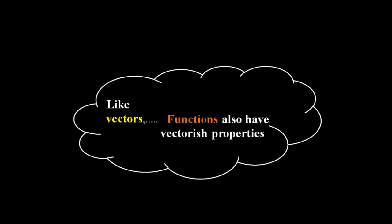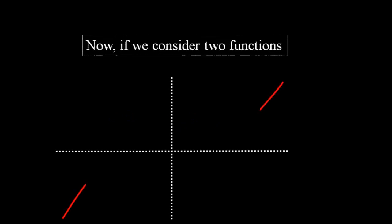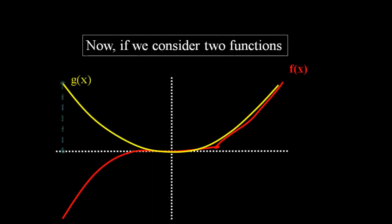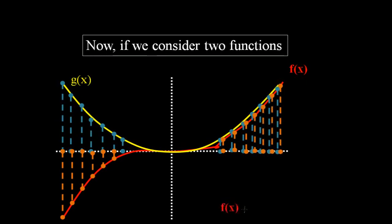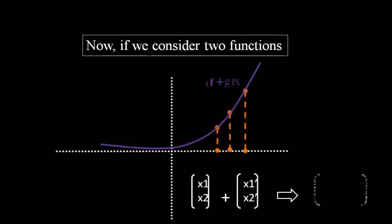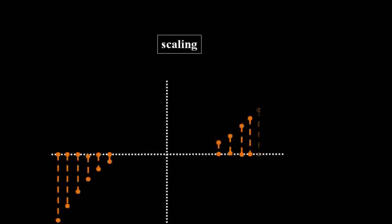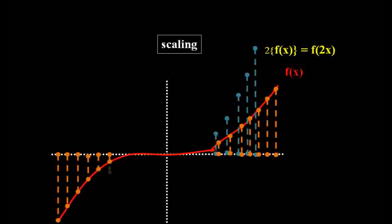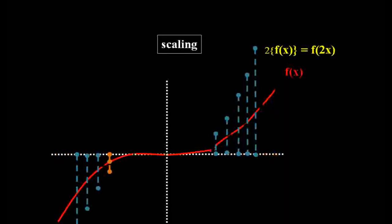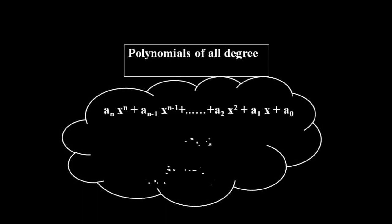Like adding and scaling of vectors, functions also have the same properties. Consider two functions f and g. Adding these functions is similar to adding the x-coordinates of these functions. Scaling of a function with a scalar is similar to the scaling of the coordinates of the x-axis. Polynomials of all degrees also have similar properties — addition and scaling are similar to vector addition and scaling.